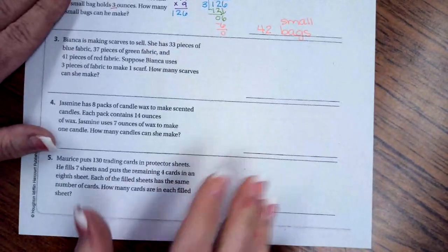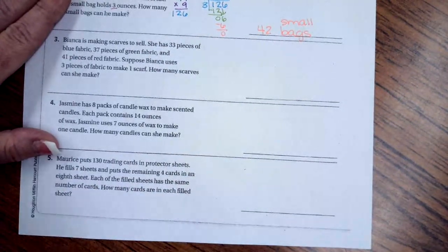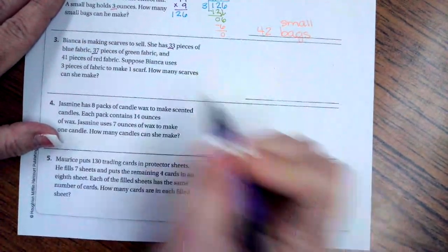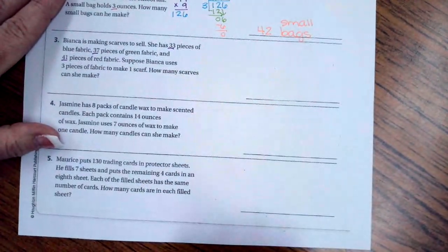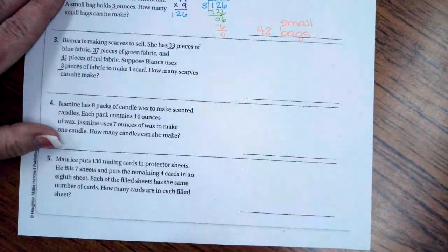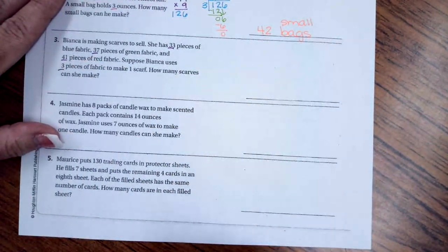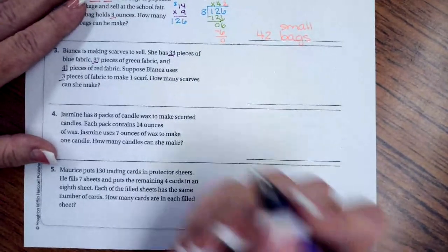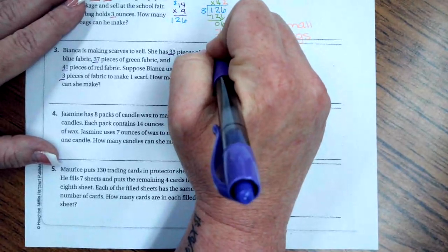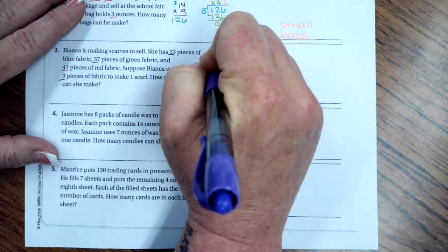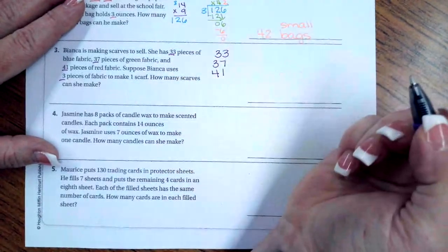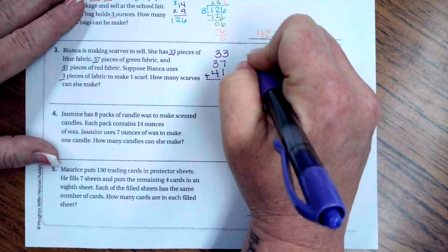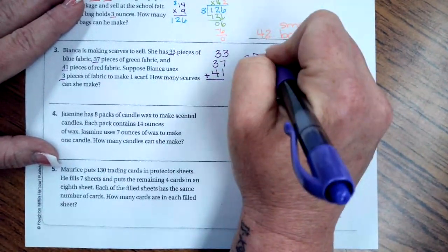Let's do number three. Bianca is making scarves to sell. She has 33 pieces of blue fabric, 37 pieces of green fabric, and 41 pieces of red fabric. Suppose Bianca uses three pieces of fabric to make one scarf. How many scarves can she make? So first, we need to know how much fabric she has all together. So we have to add up all of these other numbers. So 33, 37, and 41. We're going to add those up. Then we're going to divide that by three.